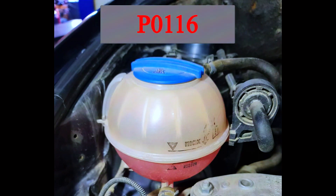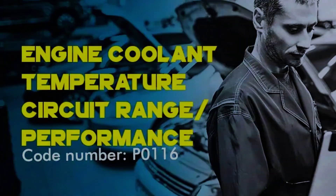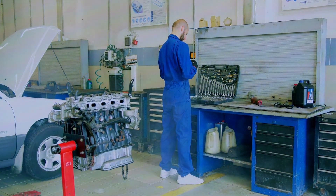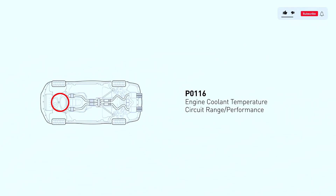This means your car's computer isn't getting a happy signal from the coolant temperature sensor. Don't worry, this is a fairly common fix and can often be tackled at home with some basic tools. The Engine Coolant Temperature Sensor, or ECT, is a crucial part of your car's engine management system. It constantly monitors the coolant temperature, which helps the computer adjust things like air-fuel mixture and fan operation. A P0116 code indicates a problem with the sensor itself, its wiring, or even the computer.